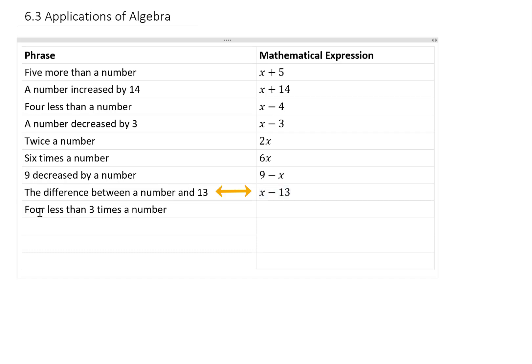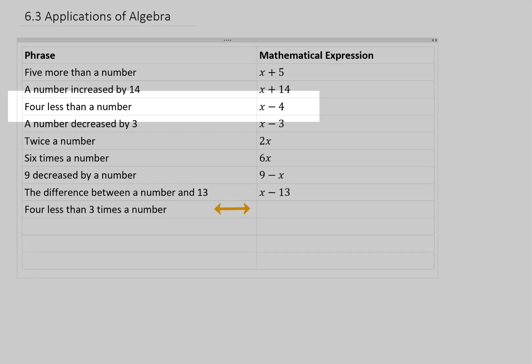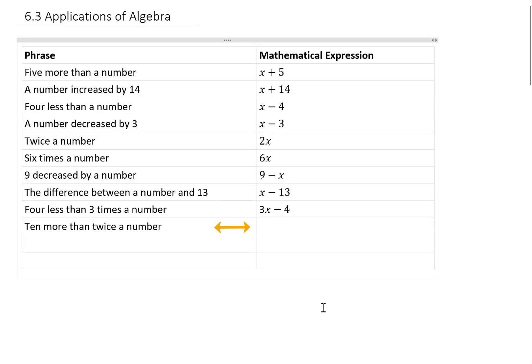Now we can start to make these a little bit more complicated by combining some of these concepts above. For example, 4 less than 3 times a number. We could refer back to this example up here where we said 4 less than a number is x minus 4, but if we want 4 less than 3 times a number, then we should really be subtracting 4 from 3x. Another example, 10 more than twice a number. 10 more than suggests that we should be adding 10 to something. The sum of 5 times a number and 7 suggests that we're going to add two things together because we use the word sum. 5 times a number is 5x and 7. And I have one more for you right here. 8 times a number decreased by 3. We're going to take 8 times x, and we're going to decrease that by 3 by subtracting 3.